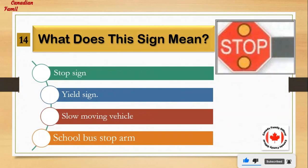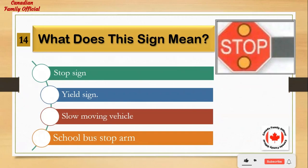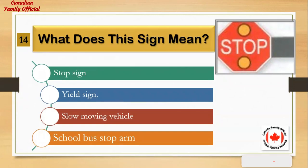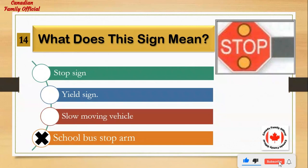What does this sign mean? Number 1: stop sign. Number 2: yield sign. Number 3: slow moving vehicle. Number 4: school bus stop arm. And the answer is: school bus stop arm.